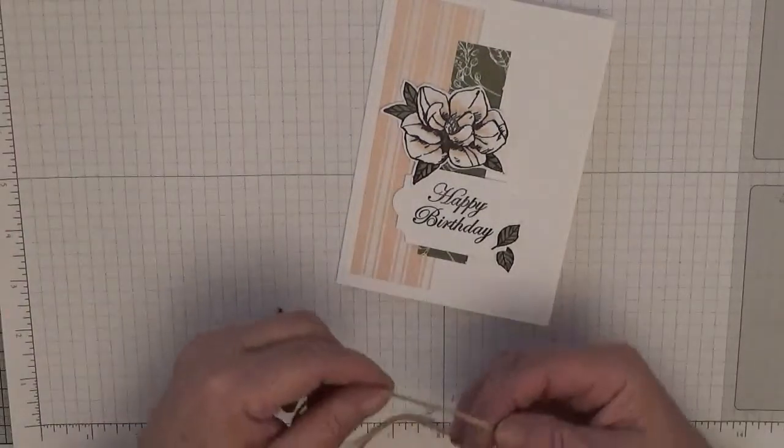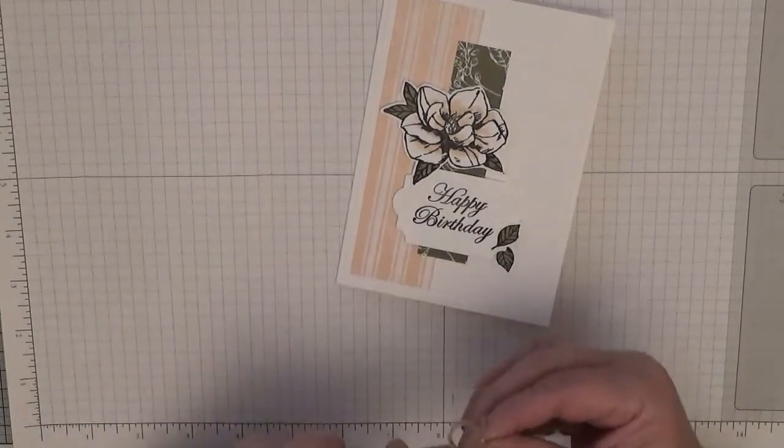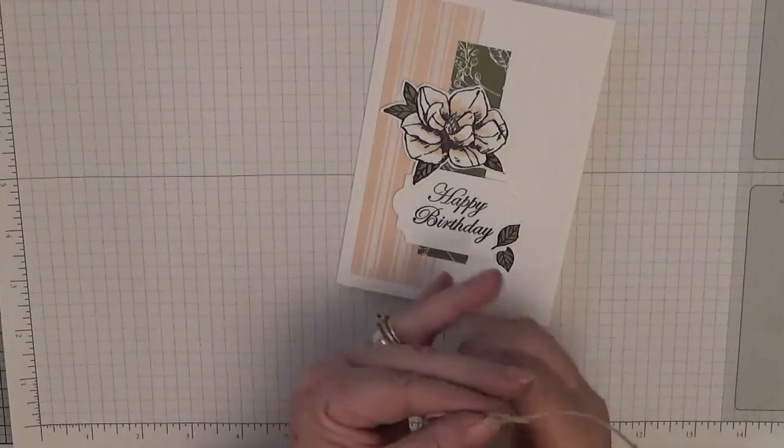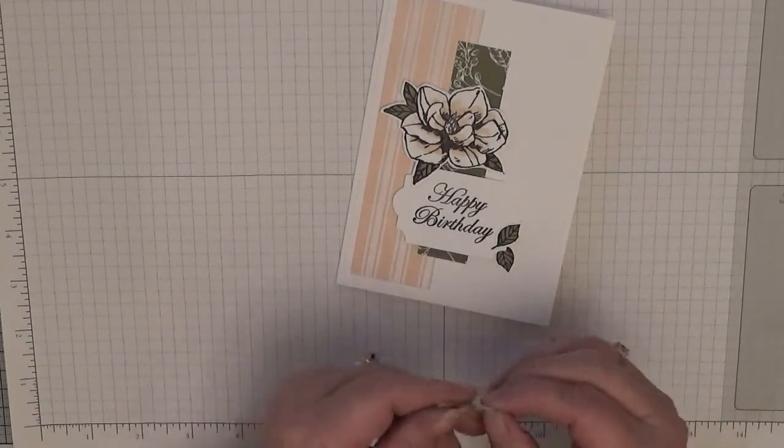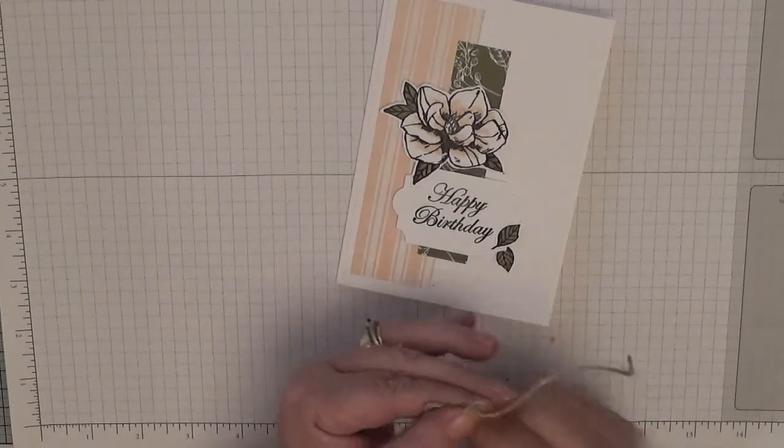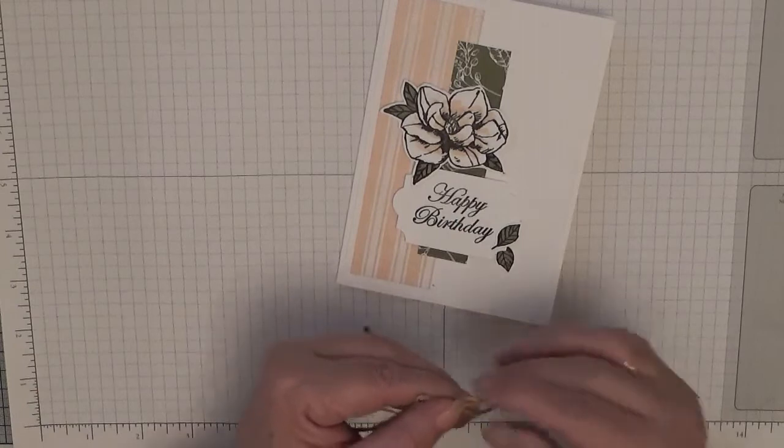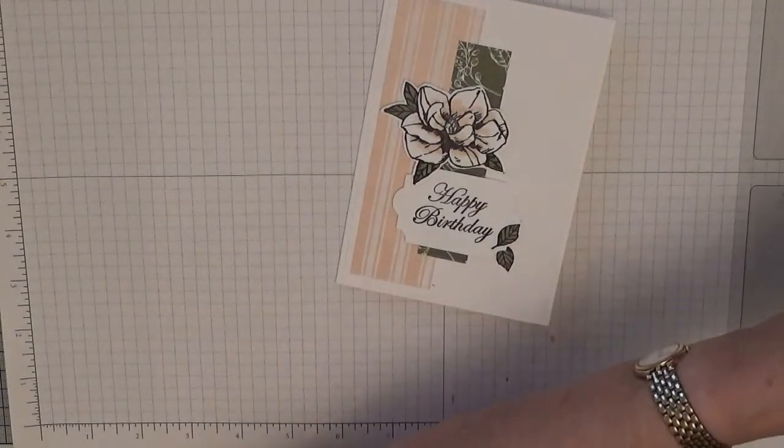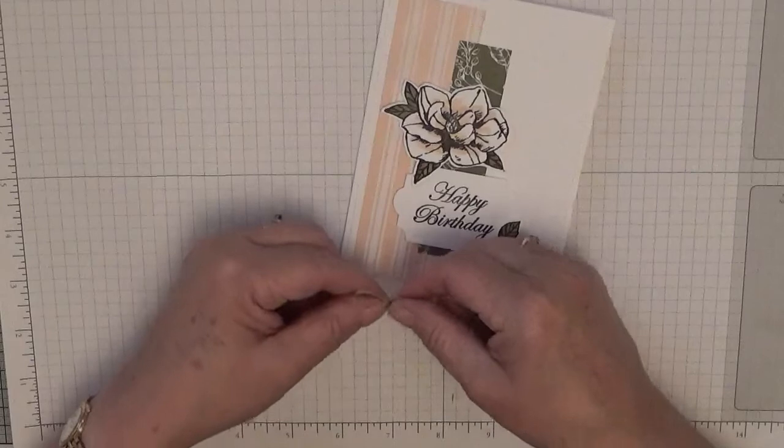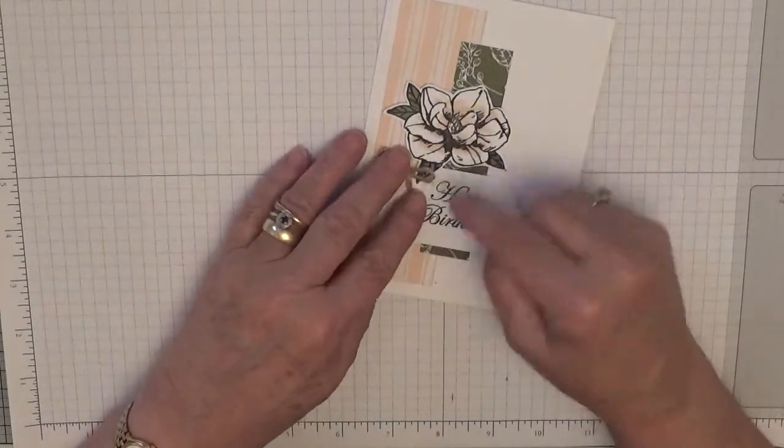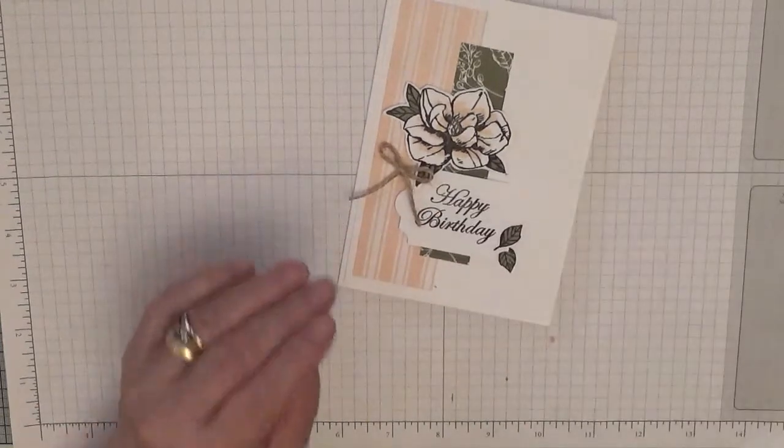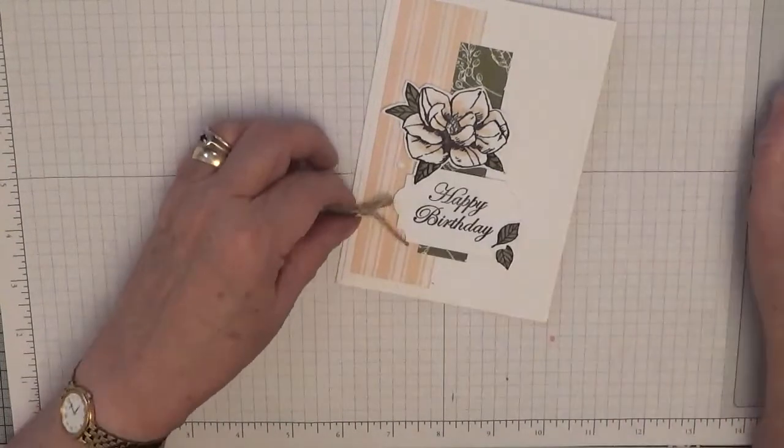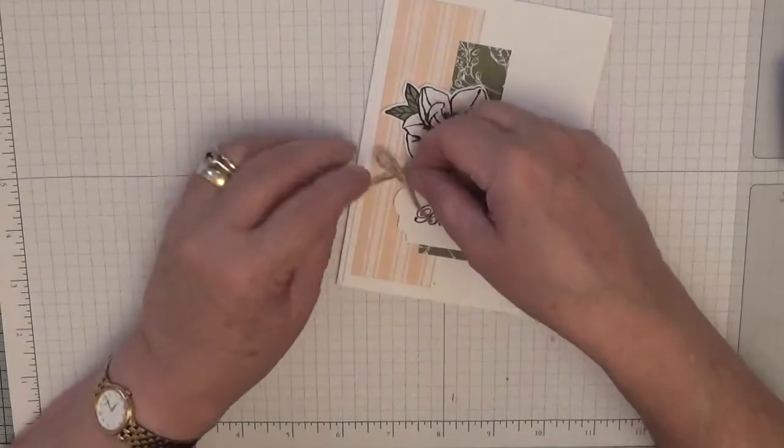And all that leaves us to do is to tie a bow with the linen thread. Don't need a big one, just a nice little one. I'm just going to stick a double glue and stick that in.